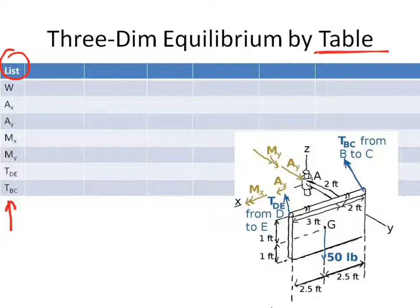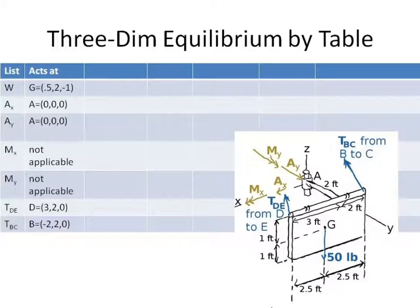five forces in two moments, and you know that you have a complete list. The next column says, where does it act? You have a force, and it acts at a place. Where does it act? In this case, you know that your weight acts at G. The tensions in your two cables act at D and B.